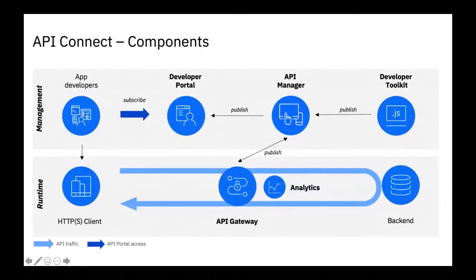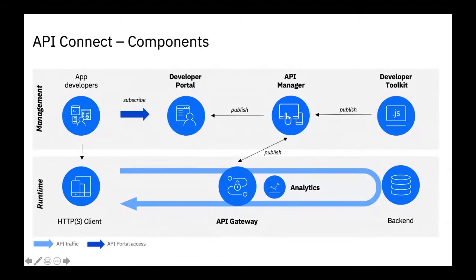Similarly, you also push the policies to the developer portal, where application developers from different external or internal entities can come in to view those published APIs, subscribe to the products they want to use for their applications, and download the Open API specs for documentation — or the WSDL if it's SOAP-based. This is roughly the high-level overview of how our API Connect components work with one another.